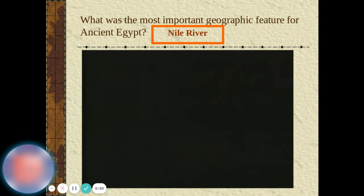The most important geographic feature for ancient Egypt is the Nile River.